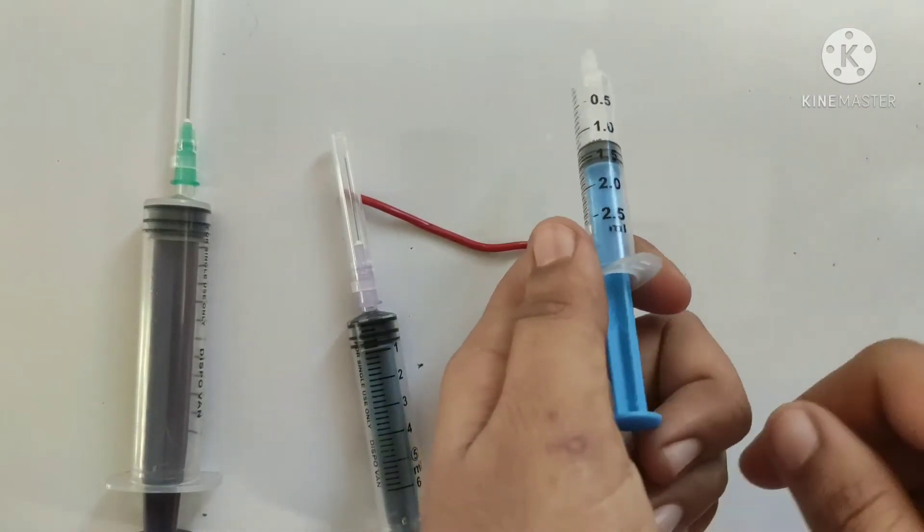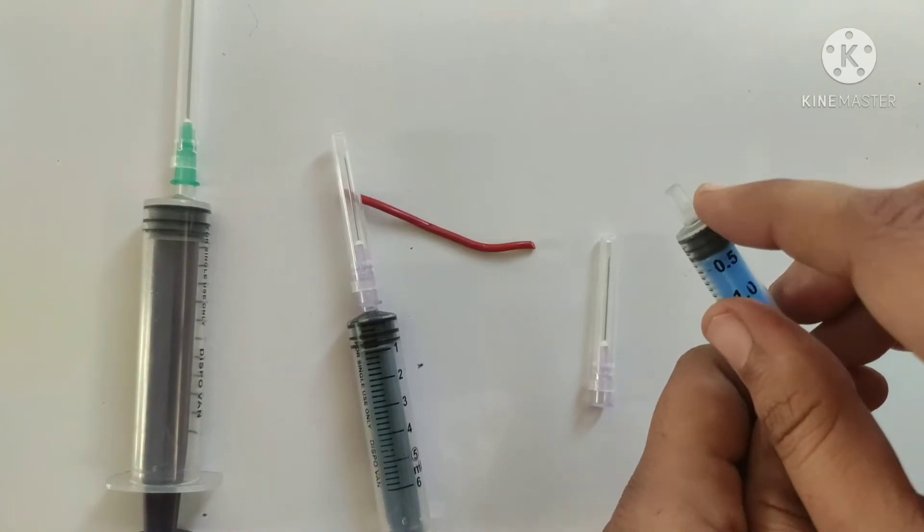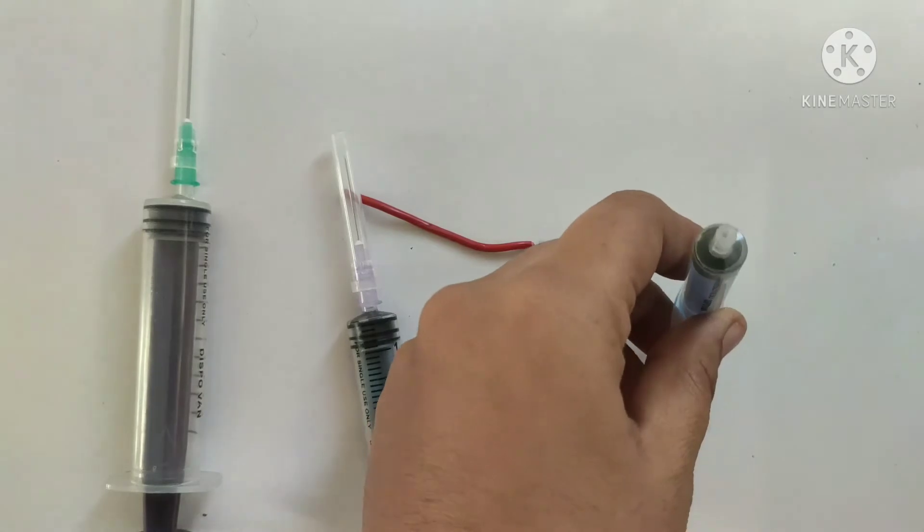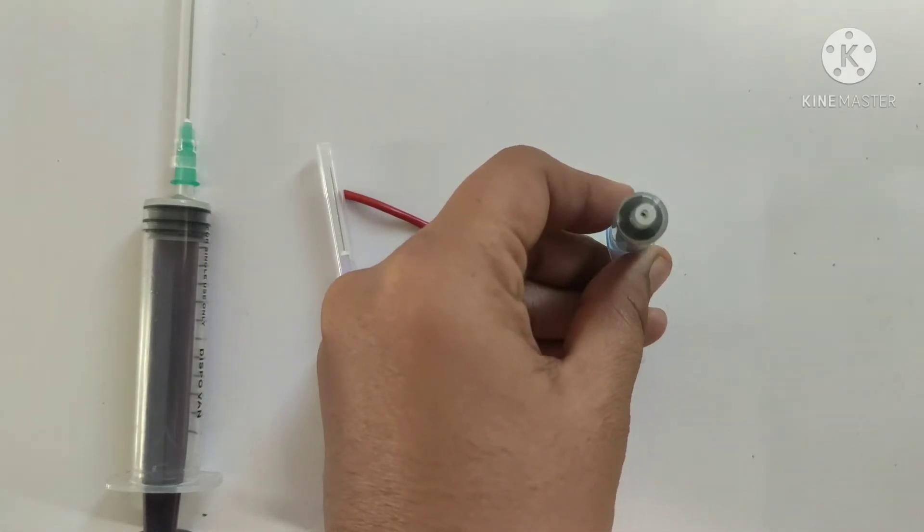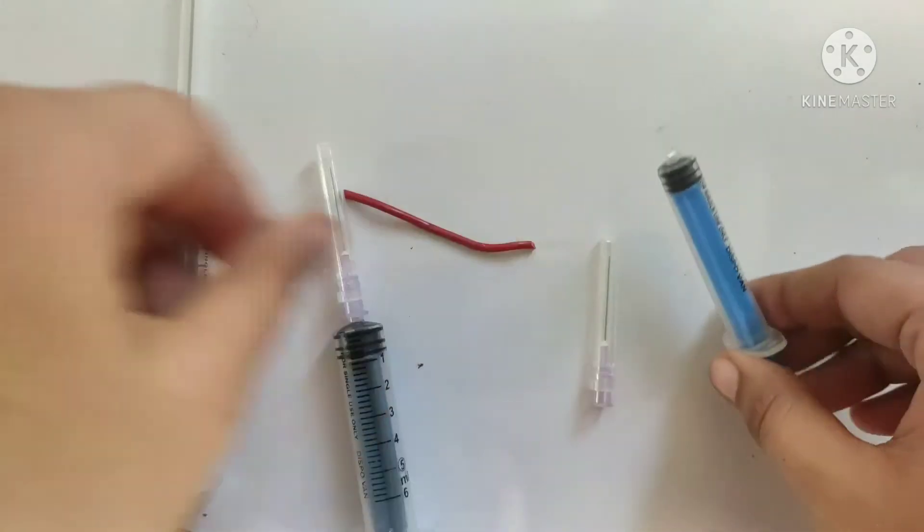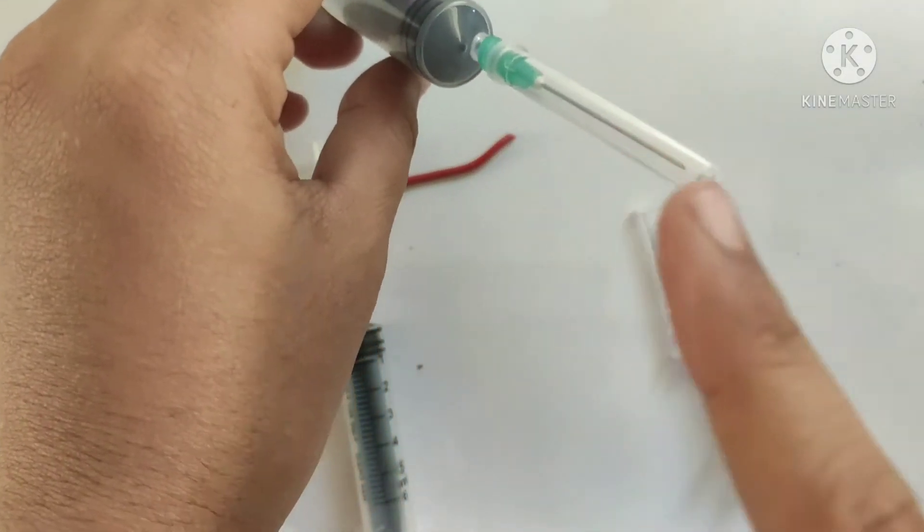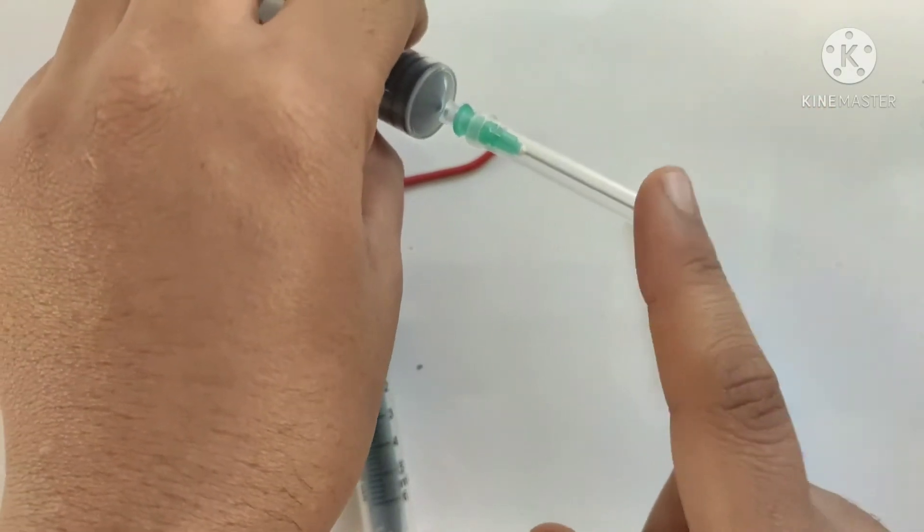The third part is known as nozzle or tip, where our needle is inserted. We can see that in this syringe, this nozzle is located centrally. But in some syringes, this nozzle will be located in periphery, as we can see in this one. It is used for intravenous injection.